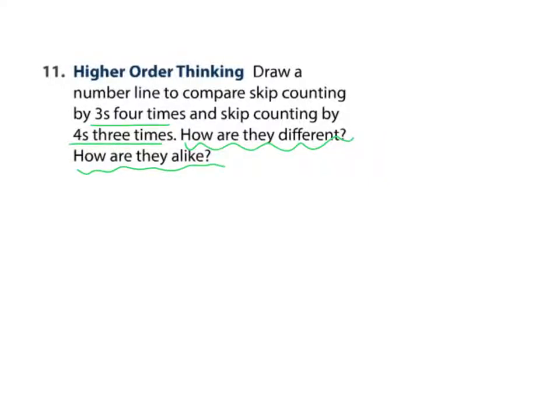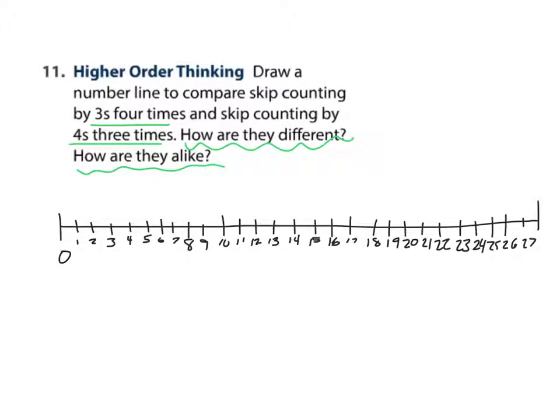So I am going to draw one number line. Remember, we start at 0. So I will start by counting by 3s 4 times. Remember, we're always starting at the 0. So we have, there's 3, that's 1, 2 jumps, 3 jumps, 4 jumps. Those are my 3s.